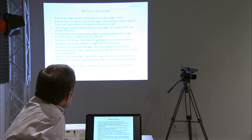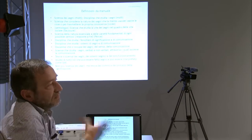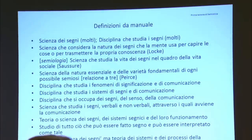Andiamo avanti. Saussure la chiamava semiologia — non stiamo a precisare la differenza, diciamo che non c'è dal punto di vista che ci interessa quantomeno oggi. 'Scienza che studia la vita dei segni.' Ancora: 'scienza della natura essenziale e delle varietà fondamentali di ogni possibile semiosi.' Che cos'è una semiosi? È l'instaurazione di un rapporto di significazione fra elementi. Laddove è importante per Peirce che questi elementi sono tre, necessariamente tre, non due. Questo è fondamentale.